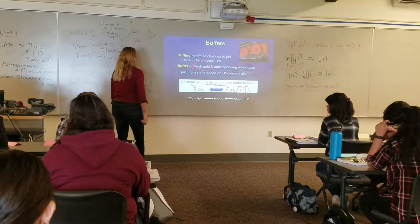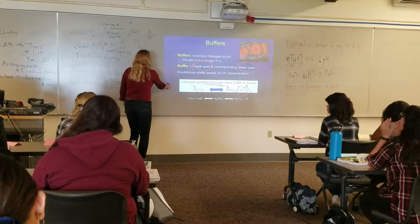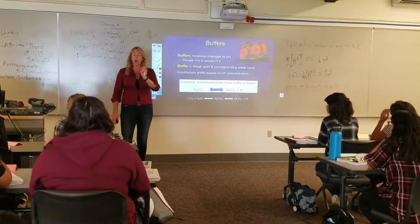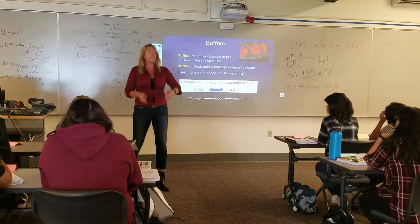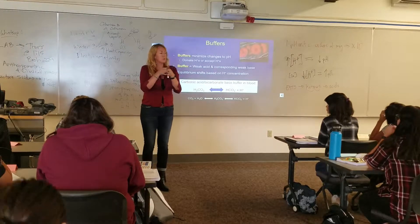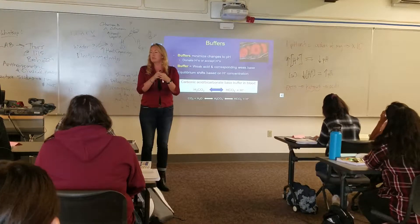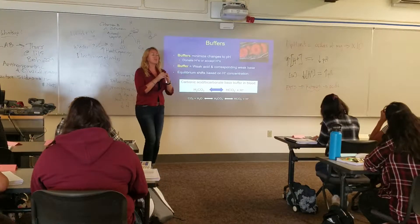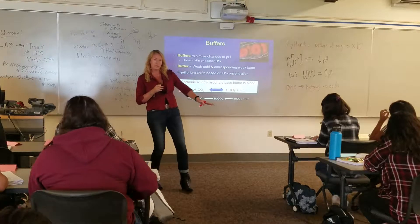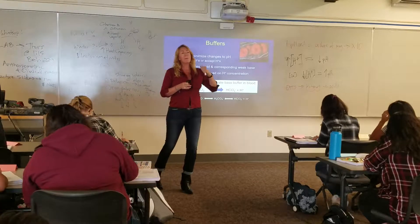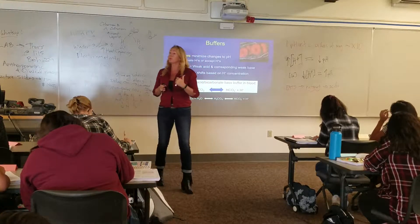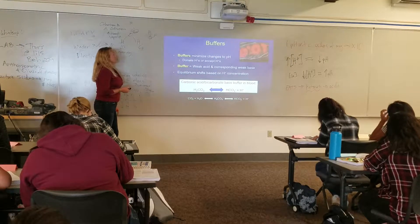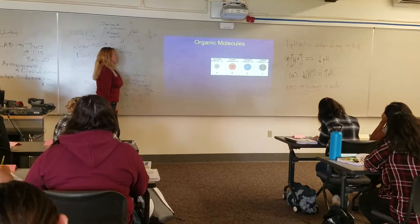The bicarbonate buffer system is responsible for maintaining the pH of your blood and your body fluids at 7.4. There are other systems, like the phosphate buffering system, but by far this is the most applicable and the most important one for maintaining that. It operates in your red blood cells and your circulatory system.